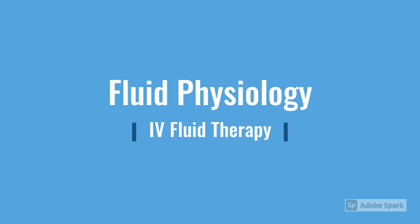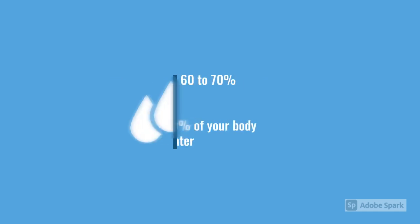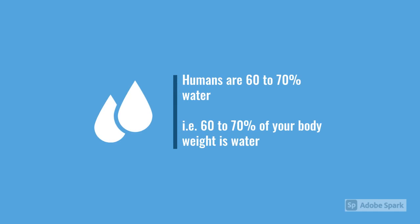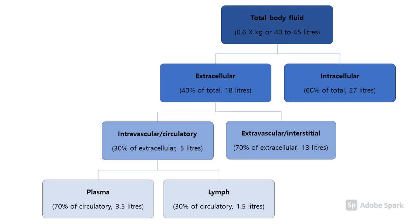So we're going to talk about some fluid physiology just to kick us off — everyone's favourite bit of science. Generally about 60 to 70% of our body weight is water, so in the average adult that's about 40 to 50 litres. That's split into two large components: intracellular or extracellular fluid. The majority of fluid is intracellular, about 60% of that total. Extracellular fluid can split into your intravascular or circulatory fluid, or your interstitial fluid.